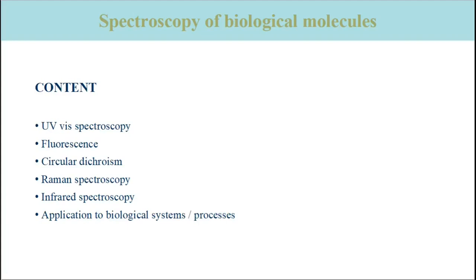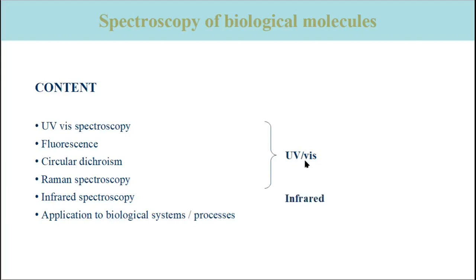This course deals with the following techniques: UV-Vis spectroscopy, which is spectroscopy in the ultraviolet and visible spectral range; fluorescence; circular dichroism; Raman spectroscopy; and infrared spectroscopy. Most of these use light in the ultraviolet and visible spectral range, but infrared spectroscopy uses infrared light.